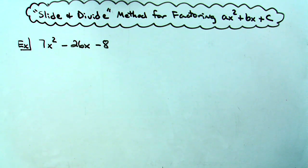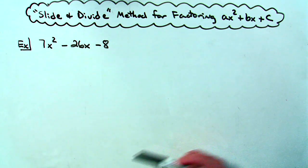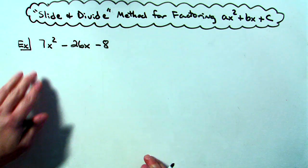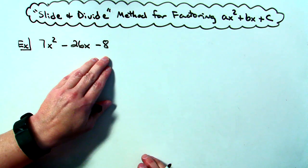Today we're going to take a look at a slide and divide method for factoring a trinomial that has a leading coefficient other than one. So for my example right here I've got 7x squared minus 26x minus 8.